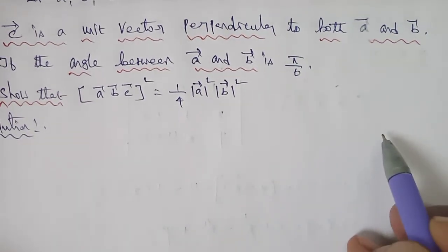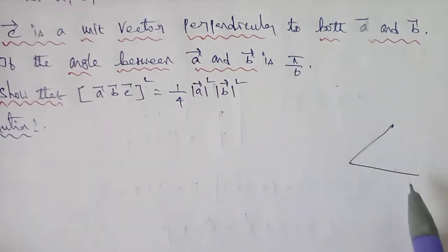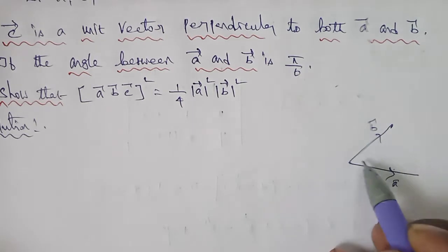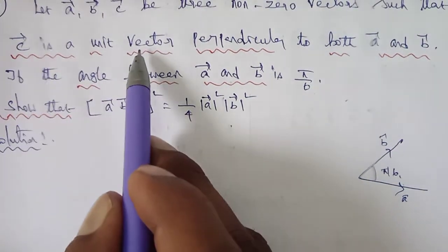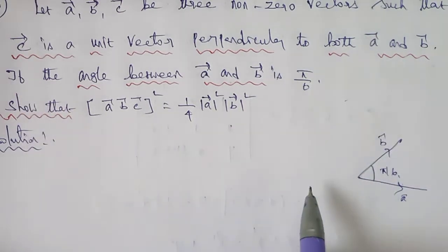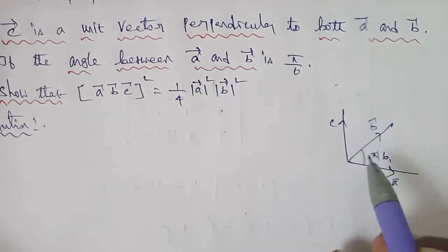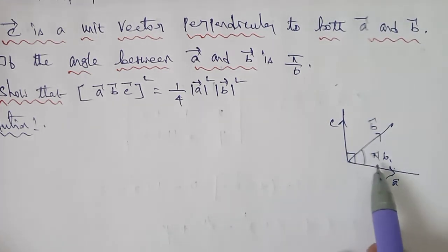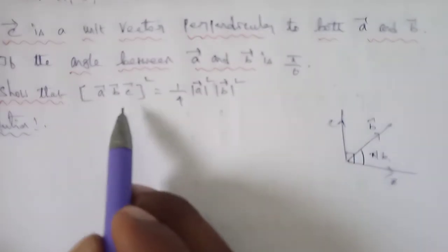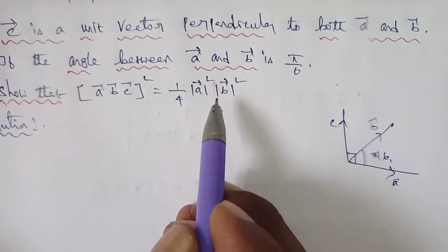So the angle between a vector and b vector is π/6. C vector is a unit vector perpendicular to both a and b. We are going to prove the box product [a vector, b vector, c vector] whole power square is equal to 1/4 times |a vector|² times |b vector|².